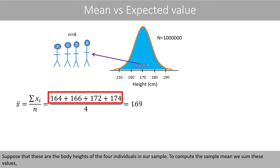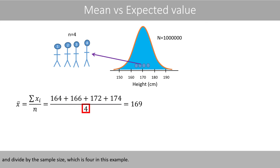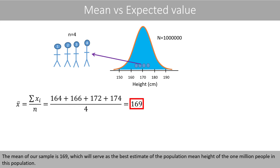Suppose that these are the body heights of the four individuals in our sample. To compute the sample mean, we sum these values and divide by the sample size, which is four in this example. The mean of our sample is 169, which will serve as the best estimate of the population mean height of the one million people in this population.